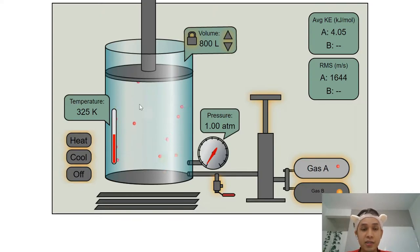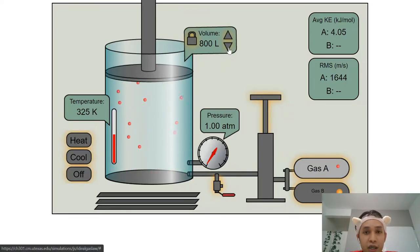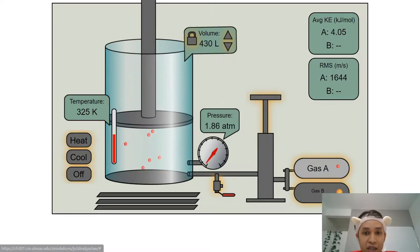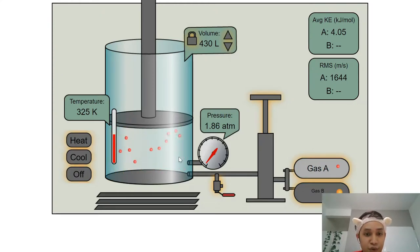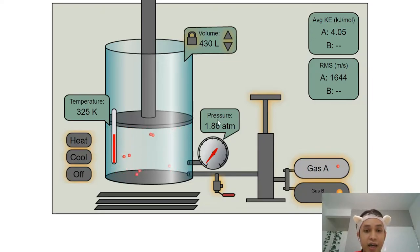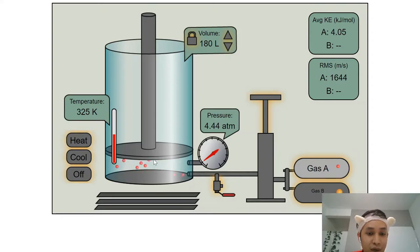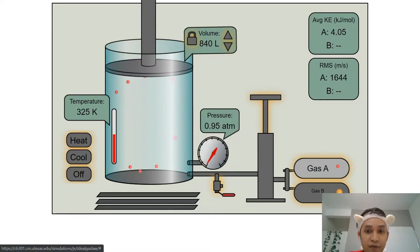I'm going to adjust the volume and you will see what happens to the pressure. As I decrease the volume, you can notice that the pressure is going up — as volume decreases, pressure increases. The reason is that the air molecules are now colliding with the container faster. As I further reduce the volume, the air molecules bounce even faster, so pressure increases further. When you increase the volume back, the air molecules collide slower and the air pressure decreases.